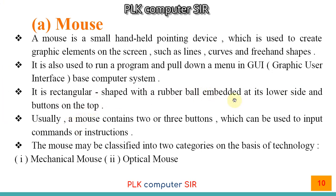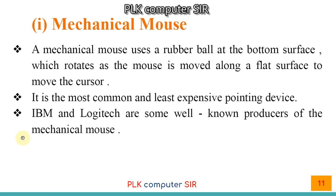A mouse is rectangular shaped with a rubber ball embedded at its lower side and buttons on top. Usually a mouse contains two or three buttons used to input commands or instructions — left button, right button, and sometimes a middle scroll wheel. The mouse may be classified into two categories based on technology: mechanical mouse and optical mouse.